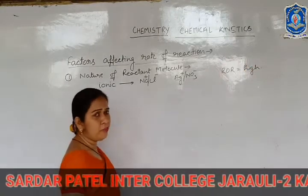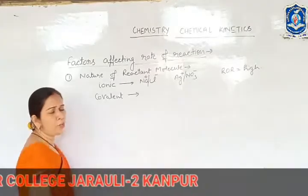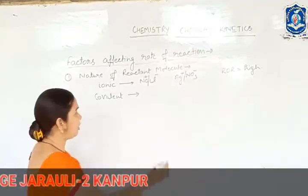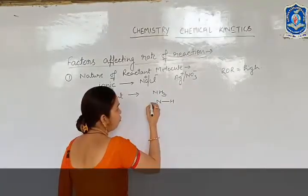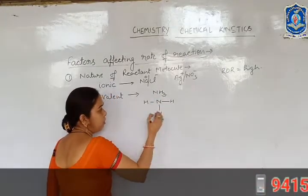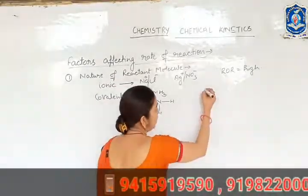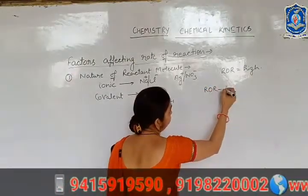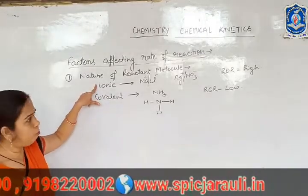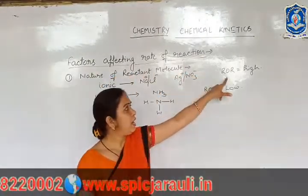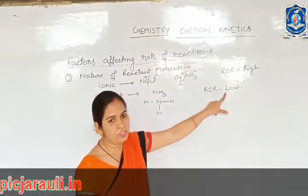And if the reactant molecules are covalent in nature, like NH3, all three hydrogen atoms are bonded to nitrogen with a covalent bond. Breaking of this bond requires energy, and in this case the rate of reaction is low. Hence, ionic molecules have a high rate of reaction and covalent molecules have a low rate of reaction.